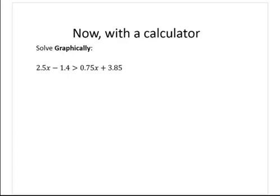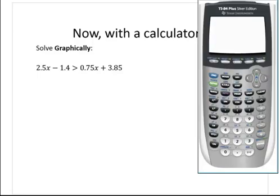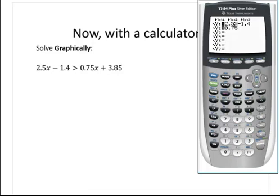So if we wish to solve the inequality 2.5x minus 1.4 is greater than 0.75x plus 3.85, let's use the calculator. We will graph both expressions — y1 as 2.5x minus 1.4 and y2 as 0.75x plus 3.85 on the y equals screen of the calculator.